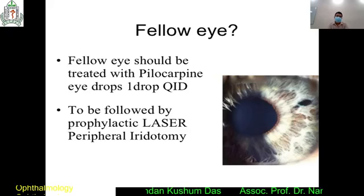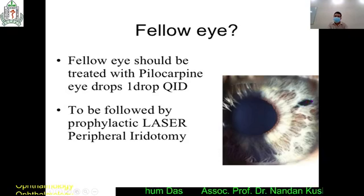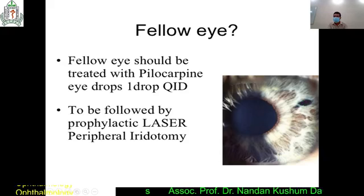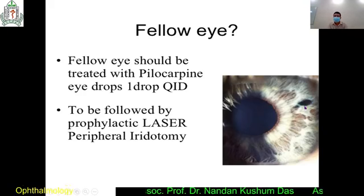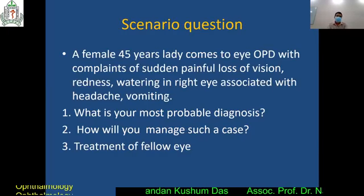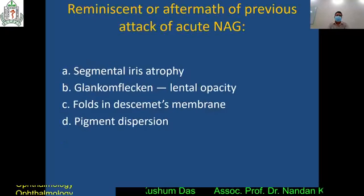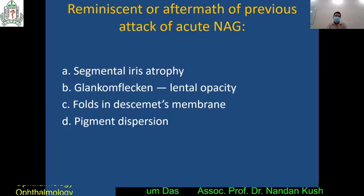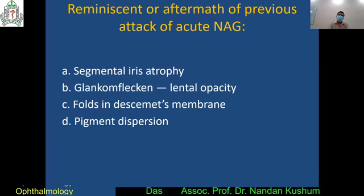Another treatment option for the fellow eye is laser iridotomy. A peripheral laser iridotomy is performed — there is a hole created, and this is the term iridotomy. It is usually done by laser, specifically YAG laser. This is the treatment of the fellow eye, and it is important in SAQ-type questions.